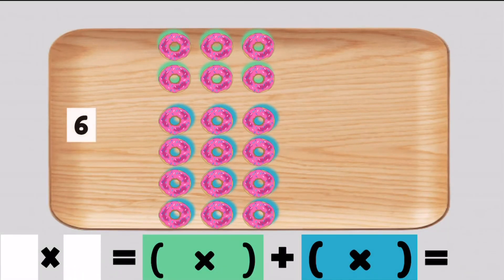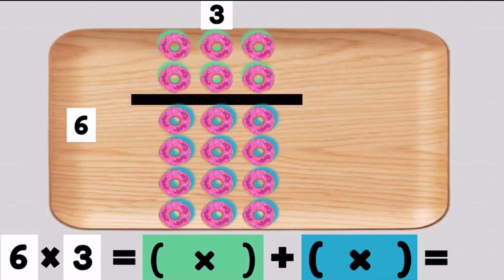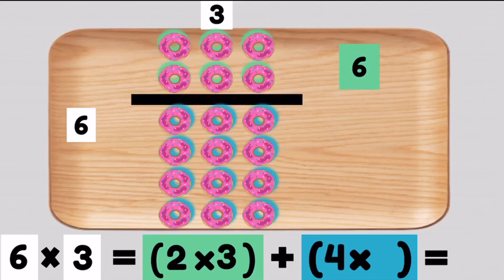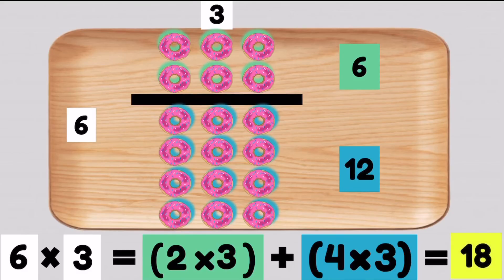This large array has six rows going across with three donuts on each row. Let's write six times three. Now we will break up this array into two smaller arrays. Our green array has two rows going across with three donuts on each row — two times three equals six. Now let's look at our blue array. We have four rows going across with three donuts on each row, and we know that four times three makes 12. Now we can add two times three which is six, plus four times three which is 12 — 12 and 6 make 18. So six times three must equal 18.